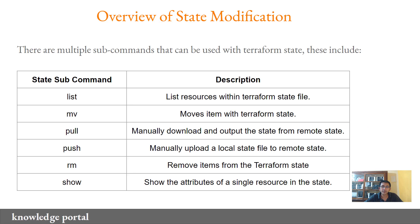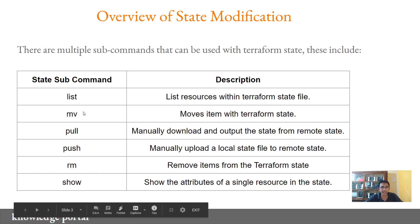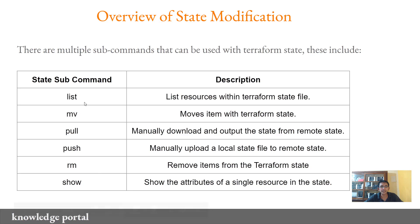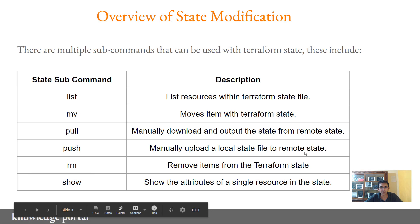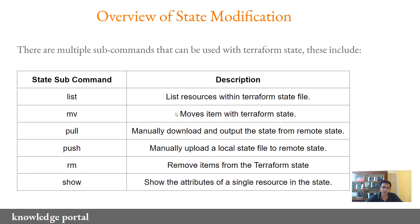Under the Terraform state, there are multiple subcommands that can be used to perform certain activities. These are some of the primary subcommands: list, move, pull, push, remove, and show, each with an associated description. Let's discuss each one of these state subcommands and also look at them from a demo perspective.